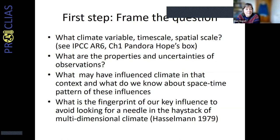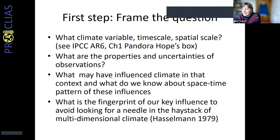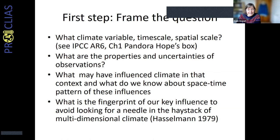The first step in attribution is to frame the question: what climate variable describes the change, what is the timescale, how widespread is it, and what are the properties and uncertainties of the observations? This leads to what we might call the fingerprint of climate change — what we are looking for in data. As described in the Hasselmann 1979 paper referenced in the Nobel Prize, instead of looking at a multi-dimensional climate system change, we look at a change in a particular pattern on a particular timescale.